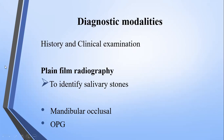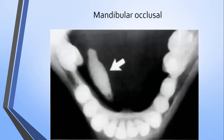One of the most commonly used diagnostic modalities is plain film radiography, in which we ask the patient to have a dental X-ray to see whether a salivary stone is present in the duct or not. These can be detected with the help of a mandibular or periapical radiograph, or an OPG (orthopantomogram). So we take history, do clinical examination, then move to plain film radiography to identify salivary stones.